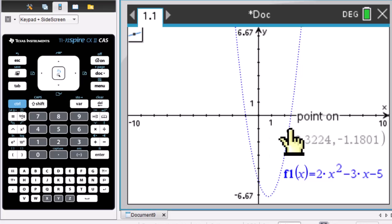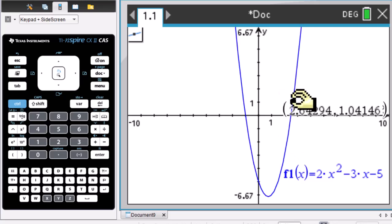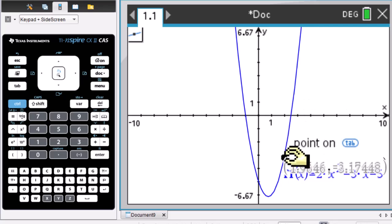Click on the graph. We got this point. You can move the point as you like. Then press ESC button.